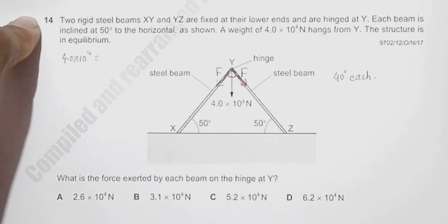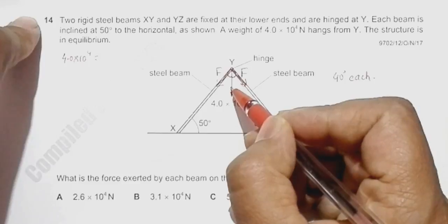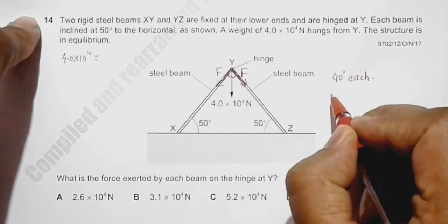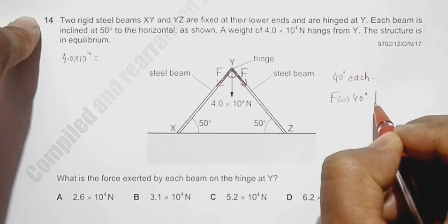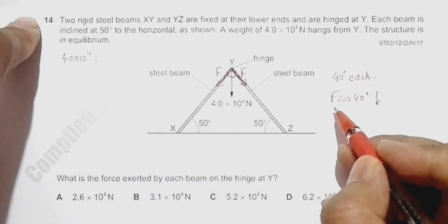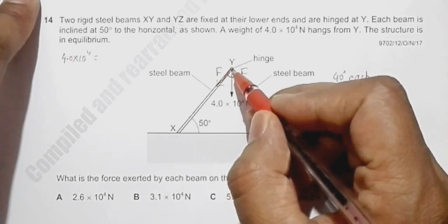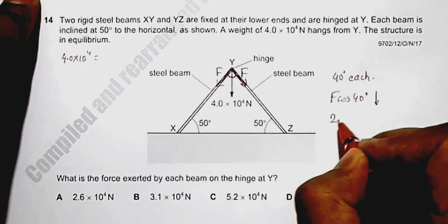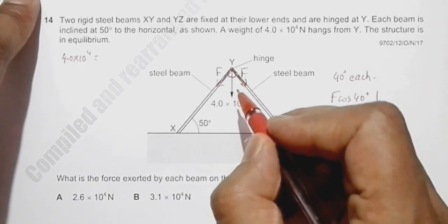The component here is F cos 40 degrees, and the component here is also F cos 40 degrees. So that means the total of these two components should be 2F cos 40 degrees, which is then equal to 4 × 10^4 Newton.